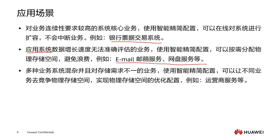For application system data where the growth rate cannot be accurately assessed, adopting SmartThin allows physical storage space to be allocated on demand, avoiding resource waste. For example, in carrier services, because there are various types of operator services with different types and different business and space requirements, using SmartThin allows different businesses to compete for this physical storage space, implementing optimized configuration of our physical storage space.